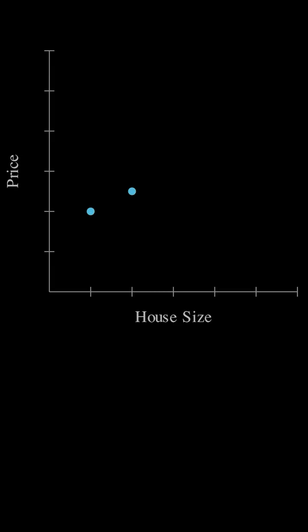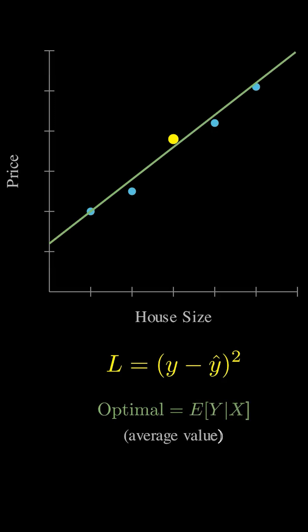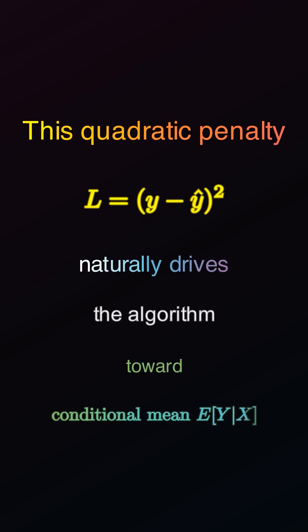Take regression, where we predict continuous numbers like housing prices. Here we use squared loss. Why? Because under squared loss, the optimal prediction is the conditional expectation, which is just the average value given your input. This quadratic penalty naturally drives the algorithm towards the conditional mean.